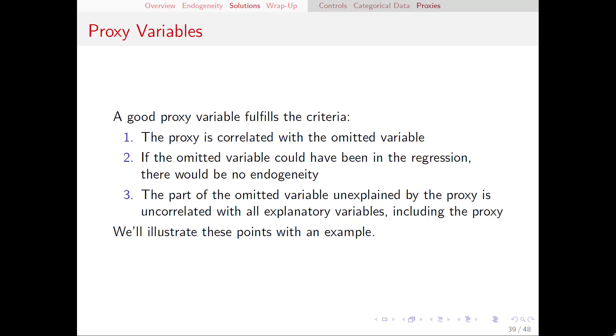There are three main assumptions that we need to be in place for a proxy to be considered a good proxy. Number one, the proxy needs to be correlated with the omitted variable that we're trying to replace. Number two, if the omitted variable could have been in the regression, there would be no endogeneity. And number three, the part of the omitted variable unexplained by the proxy is uncorrelated with all explanatory variables, including the proxy itself.